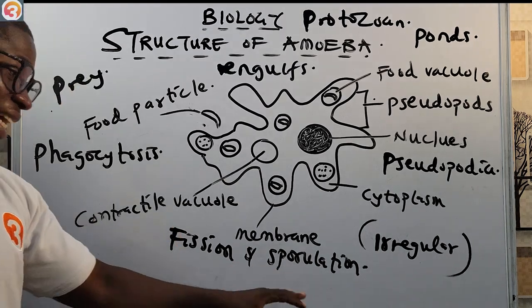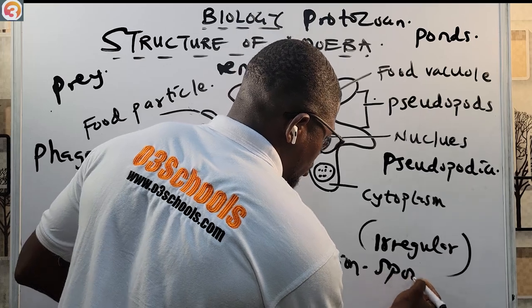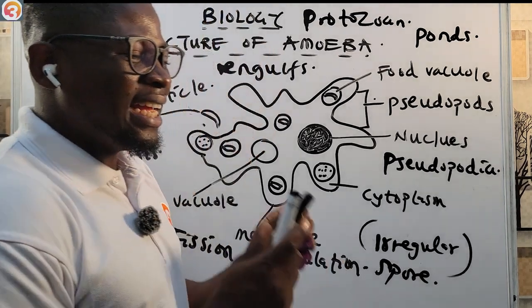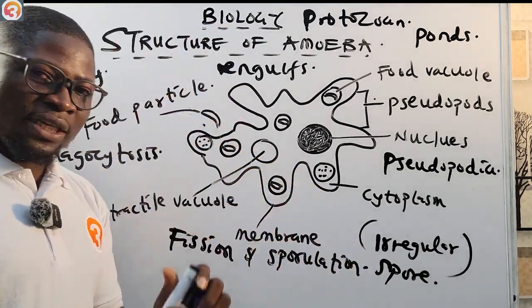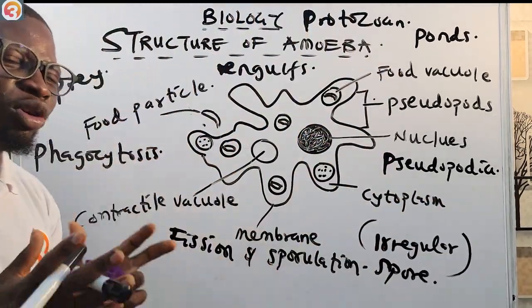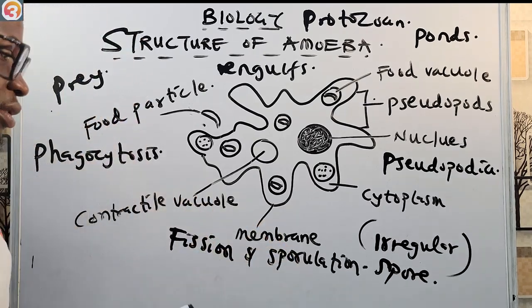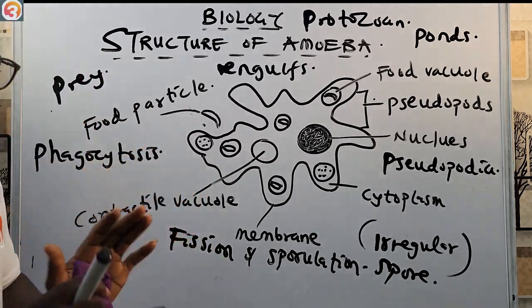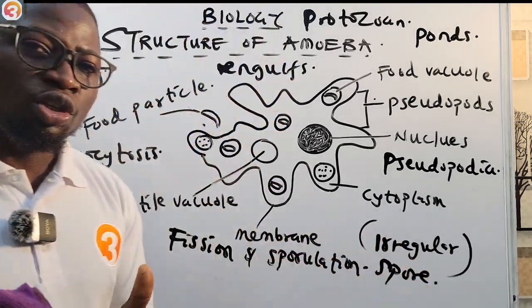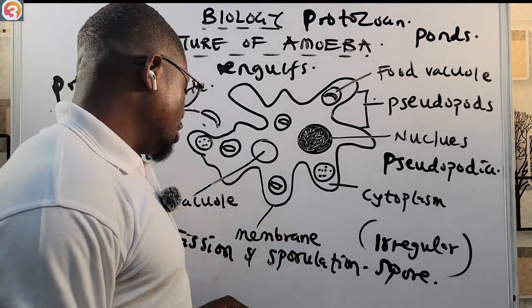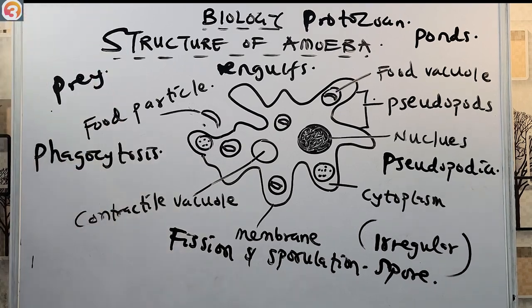Sporulation is a process by which an amoeba exists in a dormant state in the form of spores, until suitable conditions come, and then it converts back to the active organism. So amoeba reproduces by fission and sporulation.